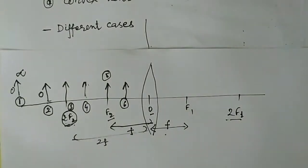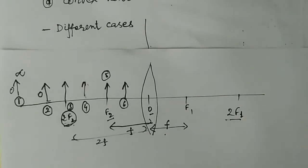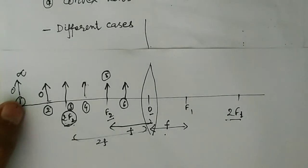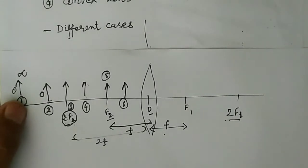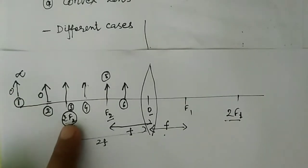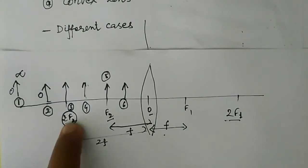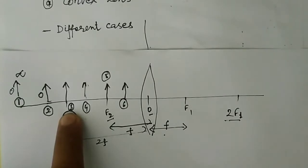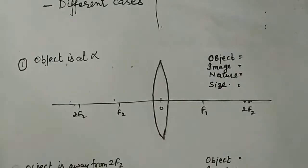So these are the six possible cases where we can keep the object. First, when the object is at infinity. Second, when the object is far away but away from 2F2. Third, when the object is at 2F2. Fourth, between 2F2 and F2. Fifth, at focus F2. Sixth, between F2 and the optical center. Let's discuss the different cases one by one.